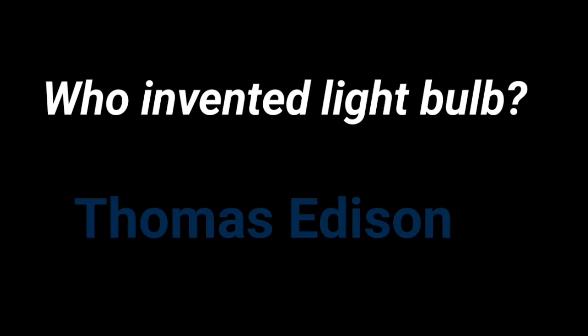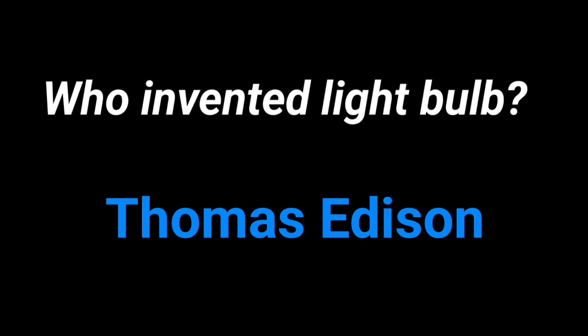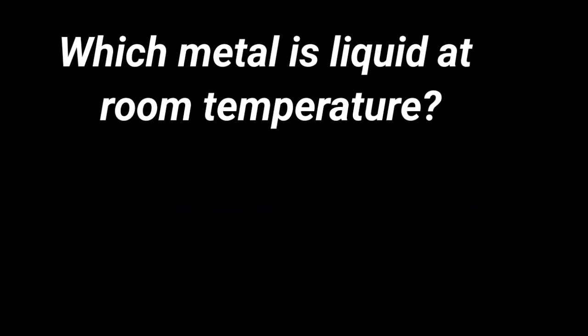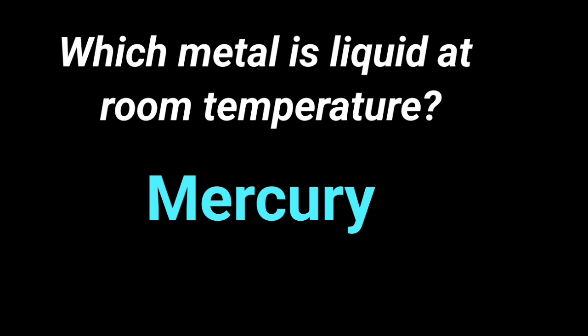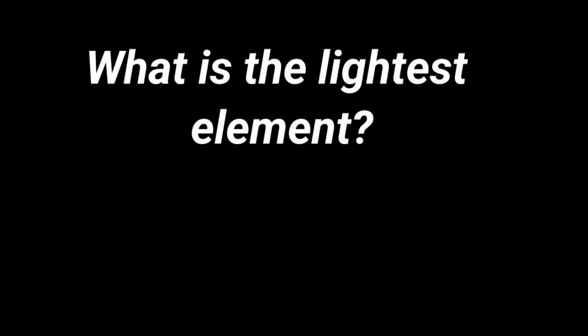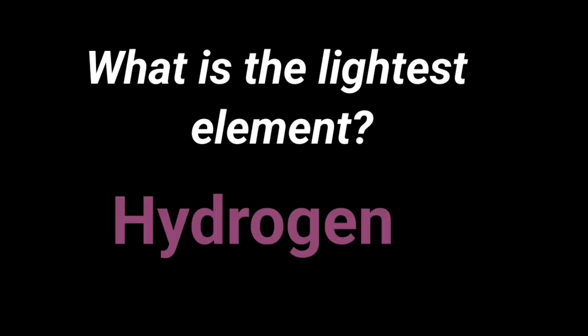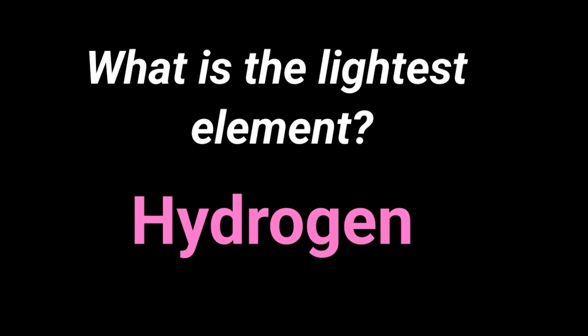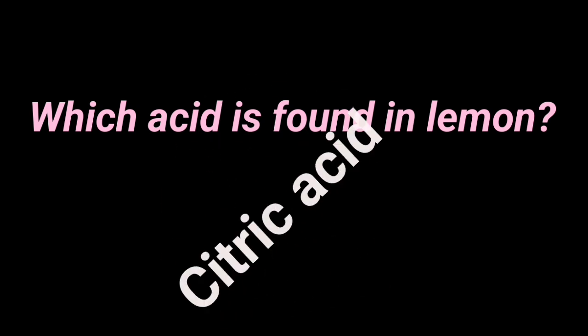Who invented the light bulb? Thomas Edison. Which metal is liquid at room temperature? Mercury. What is the lightest element? Hydrogen. Which acid is found in lemon? Citric acid.